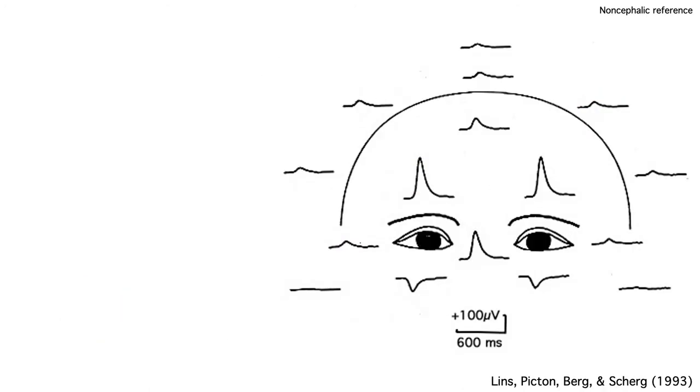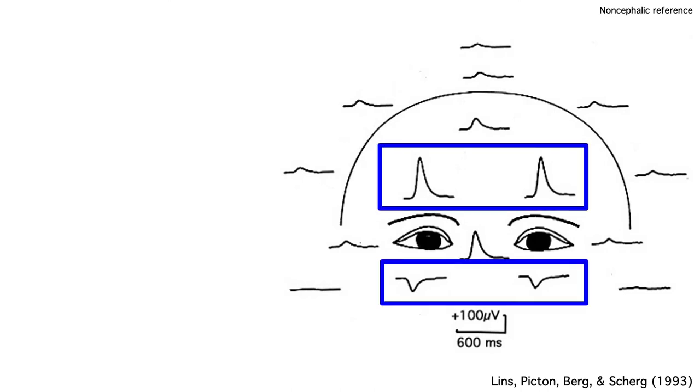And if the subject blinks, the movement of the eyelids over this dipole causes a huge voltage deflection on the scalp, negative under the eyes and positive above the eyes.